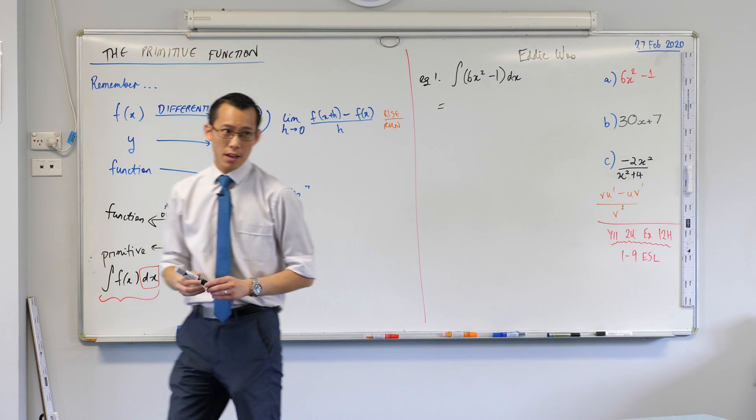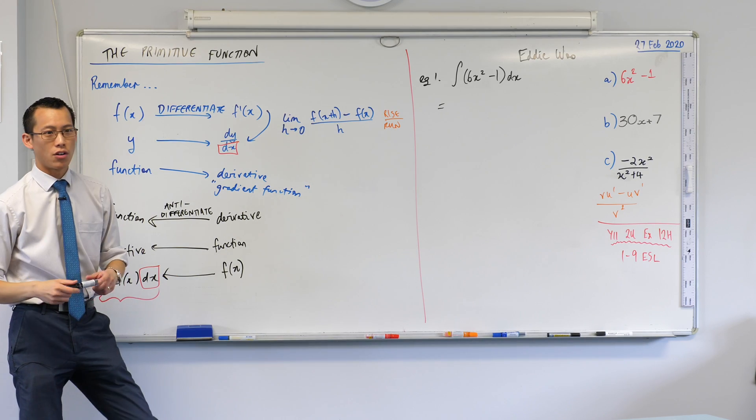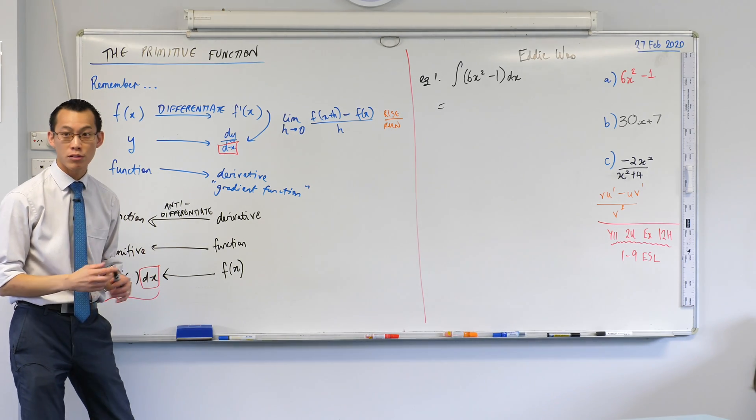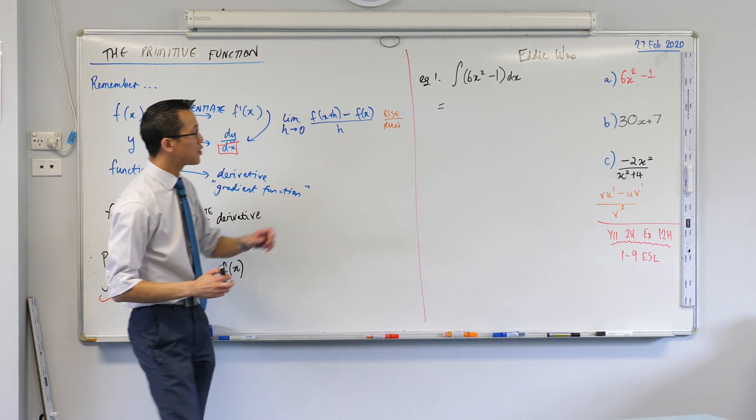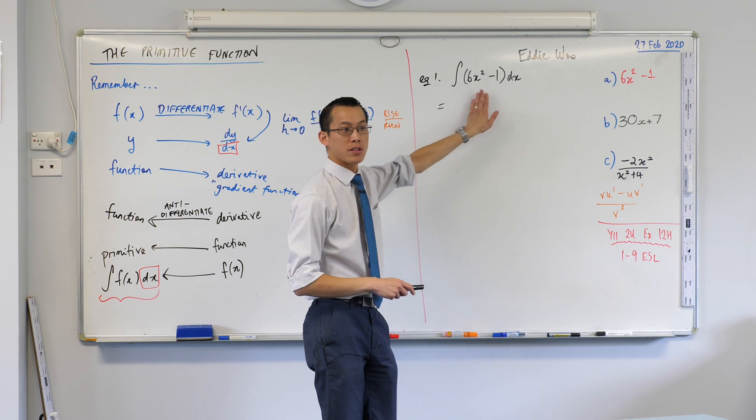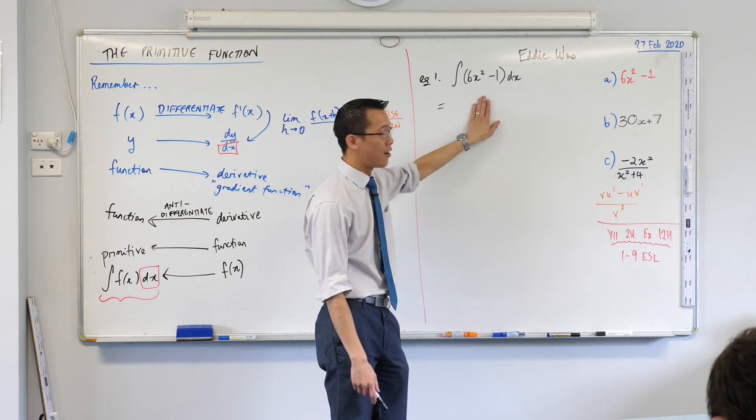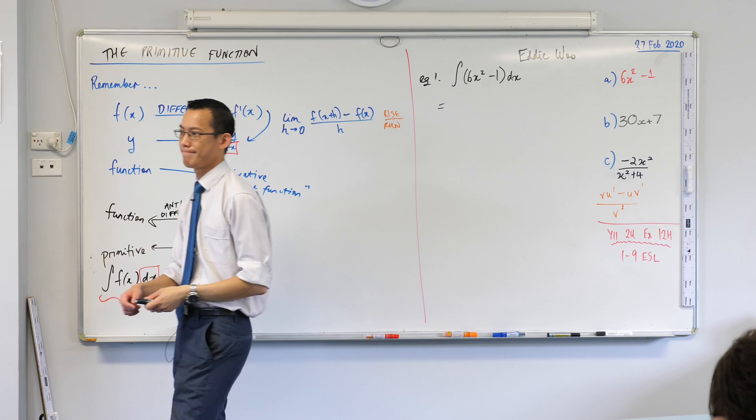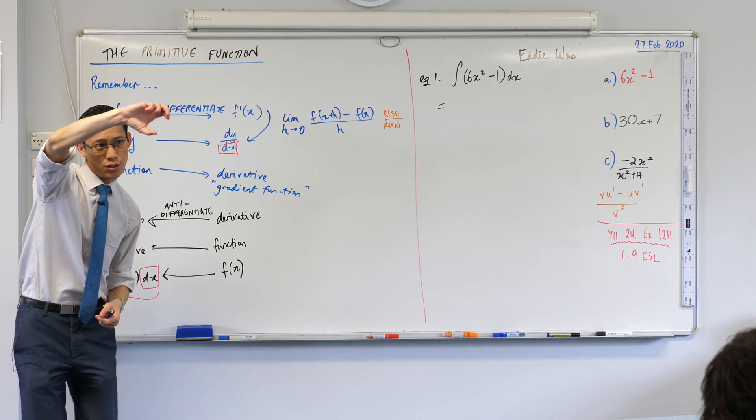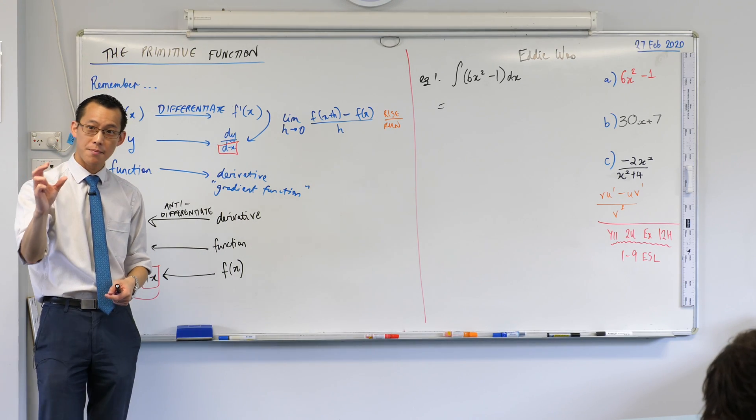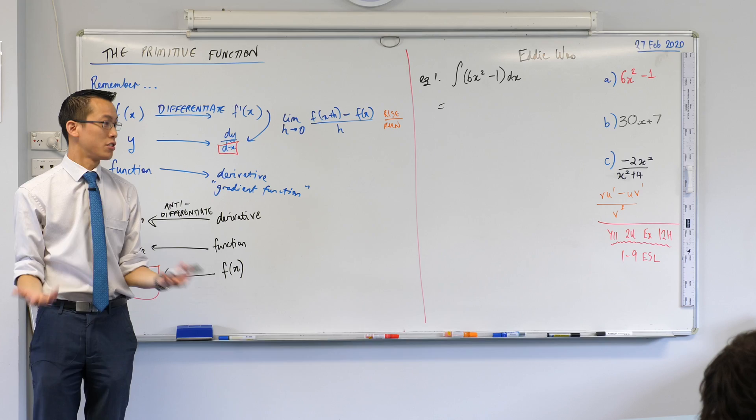Now I'm giving you this one on purpose because we've just looked at it, right? I want to undo the process of differentiation that we did before. You took a function, you took the index, you brought it down the front, you multiply by that, and then you reduce the index by 1. Do you remember that?